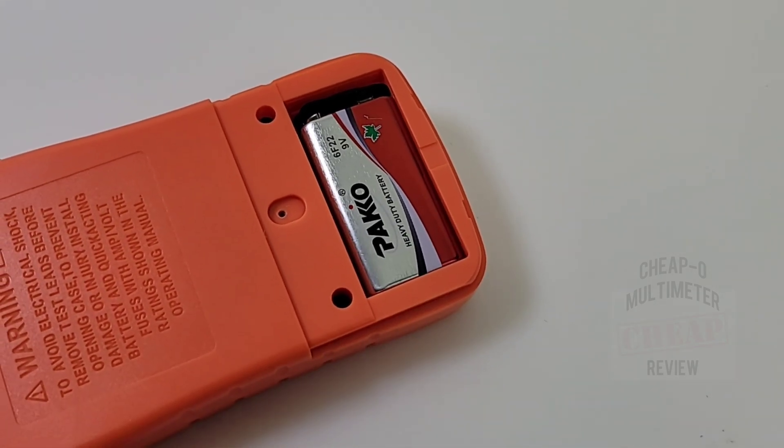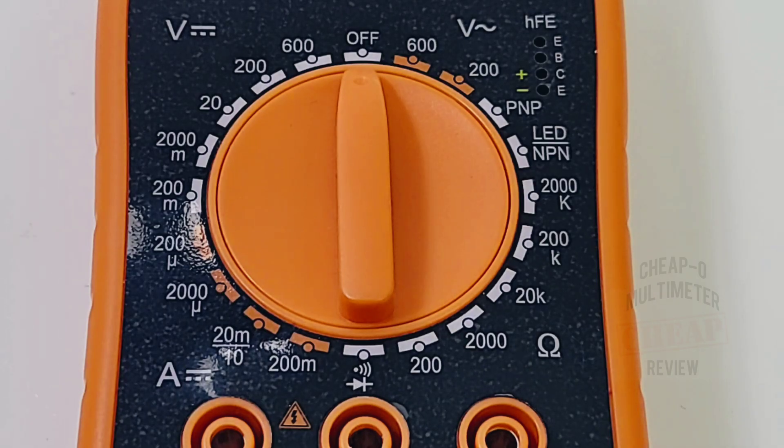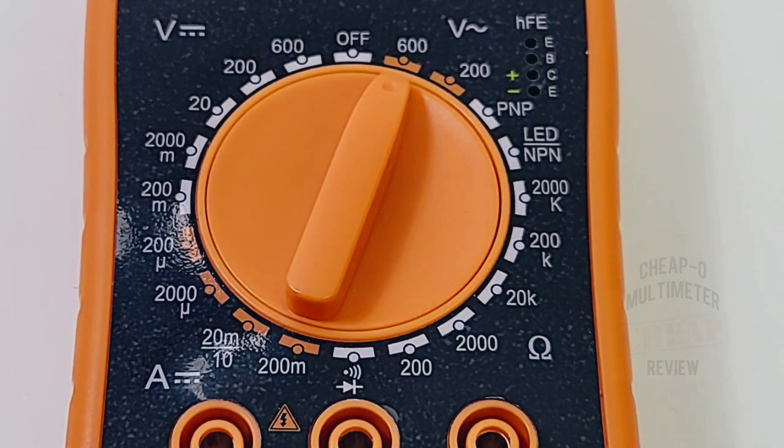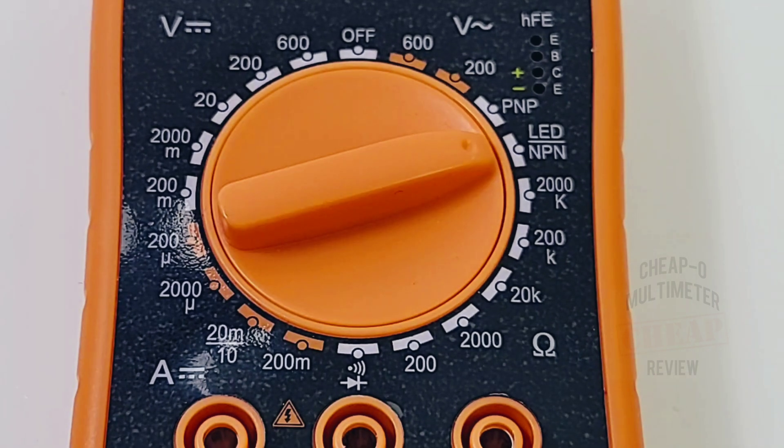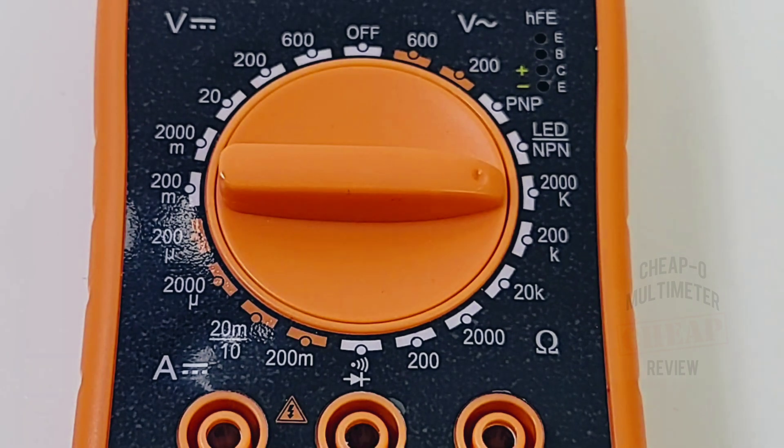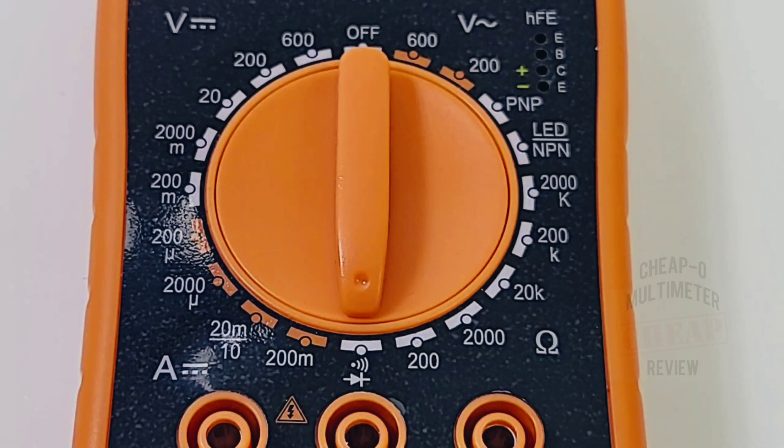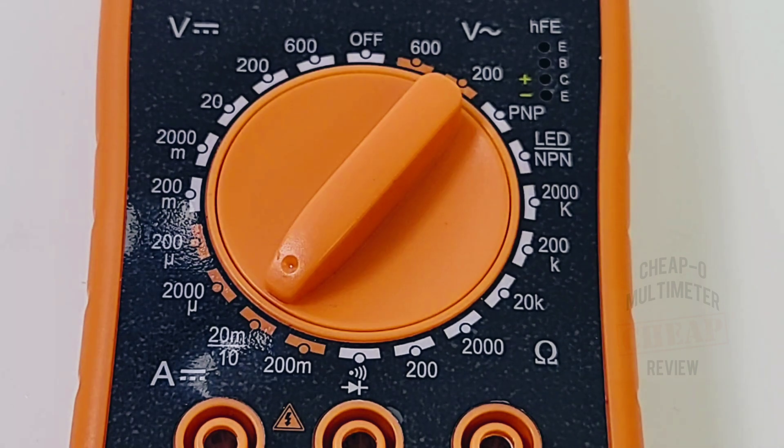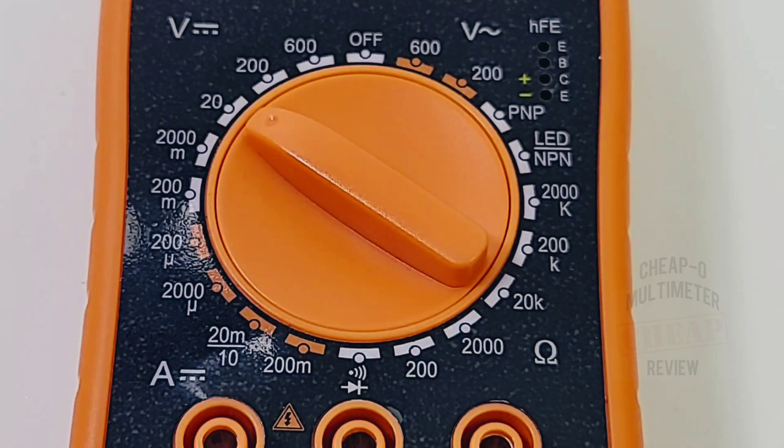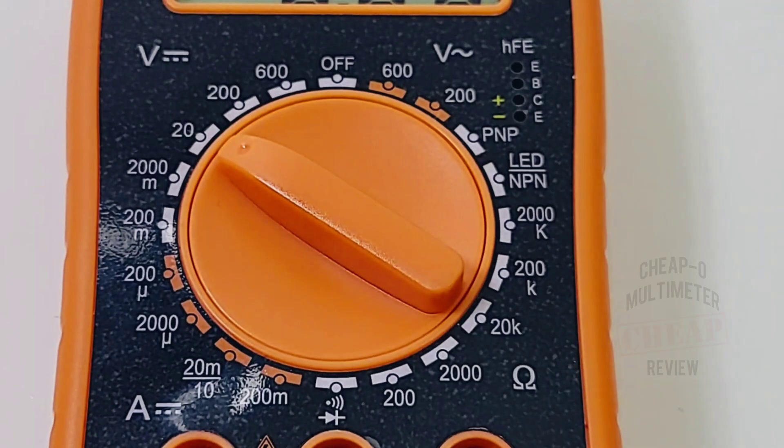Take a closer look at the rotary selector switch. Starting at the midnight or off position: volts AC up to 600 volts, transistor HFE, LED NPN/PNP, resistance up to 2 megaohm, continuity and diode, milliamps up to 200 milliamps, high current amps up to 10 amps DC, and volts DC up to 600 volts.